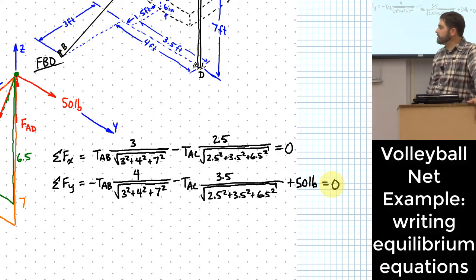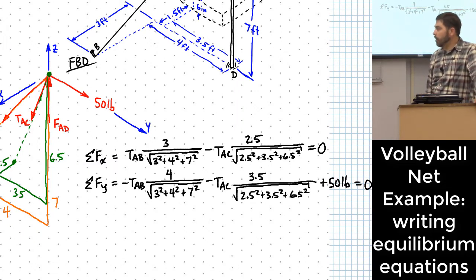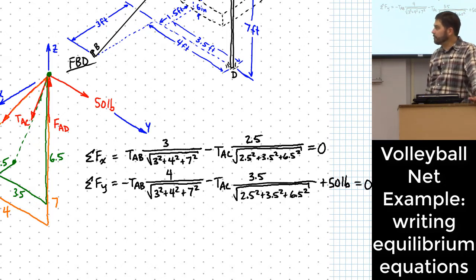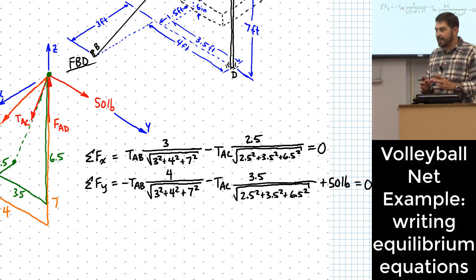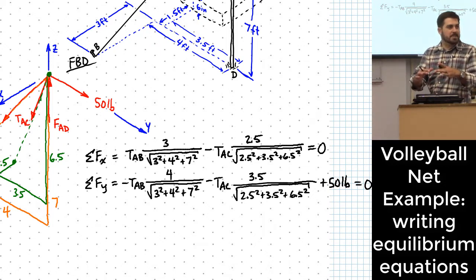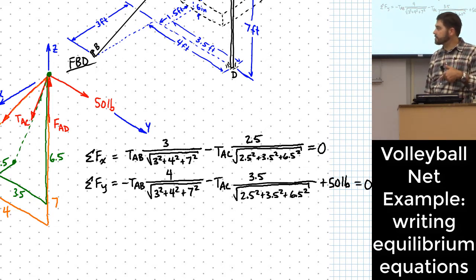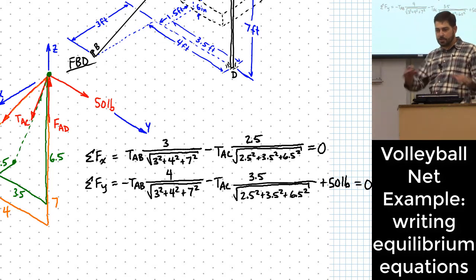Now at this point, if the question only asked for the rope forces, I could solve using just these two equations without needing a three-by-three system. But since this question asks for all three, let's write the third equation. Sum forces in the Z direction: TAB points in the negative Z, so negative TAB times 7 over the square root of 3 squared plus 4 squared plus 7 squared.